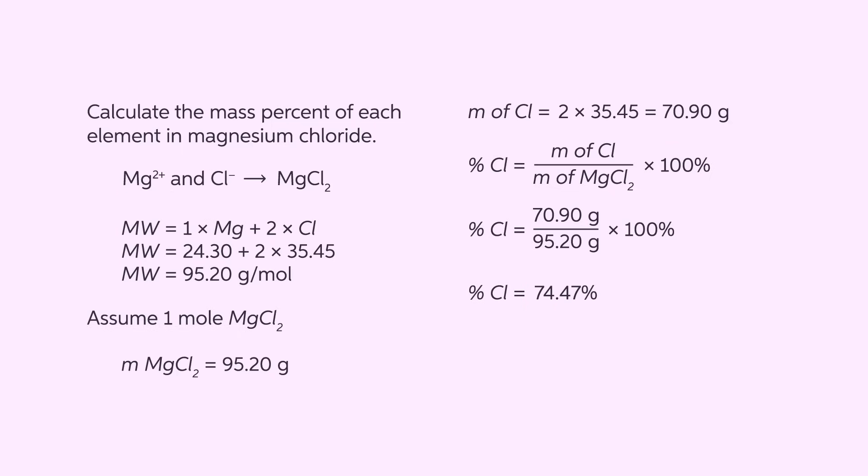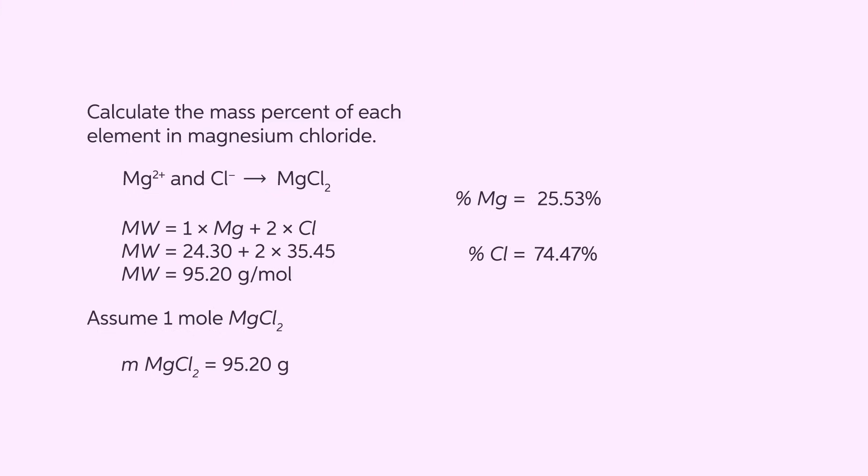Since we know the identity of the compound and that it contains only these two elements, we can check our calculations. In this case, 25.53 plus 74.47 equals 100 percent.